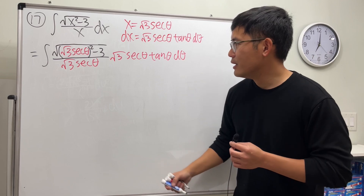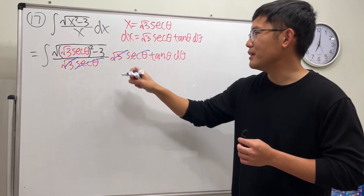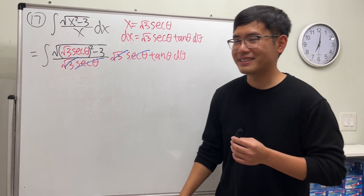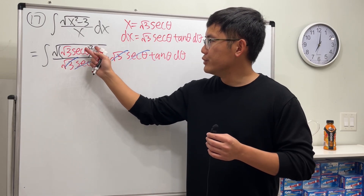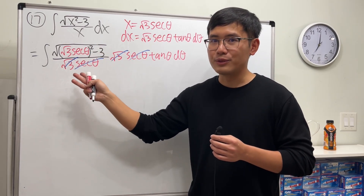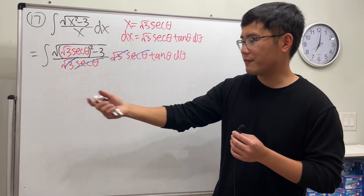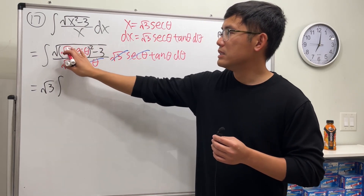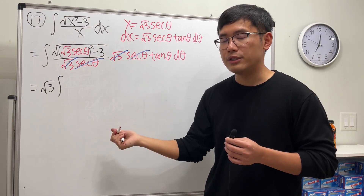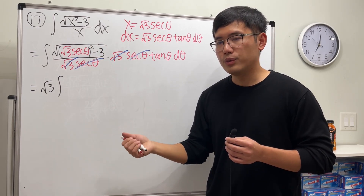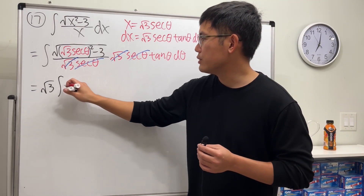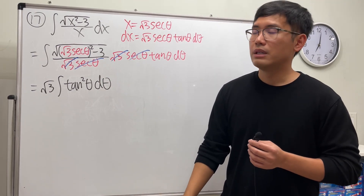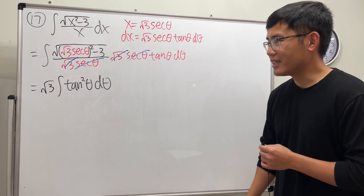Some good news: this and that can cancel, and this and that can cancel — pretty good. Inside the square root we have three secant squared theta minus three, so we can factor out the three. That gives us square root of three as a constant multiple out front, and square root of secant squared theta minus one is tangent theta. Tangent times another tangent gives us tangent squared theta.